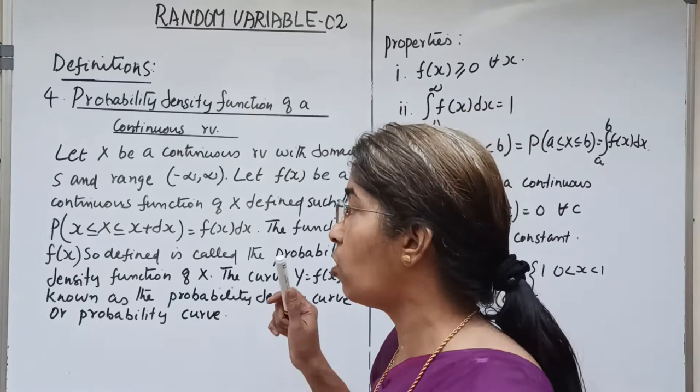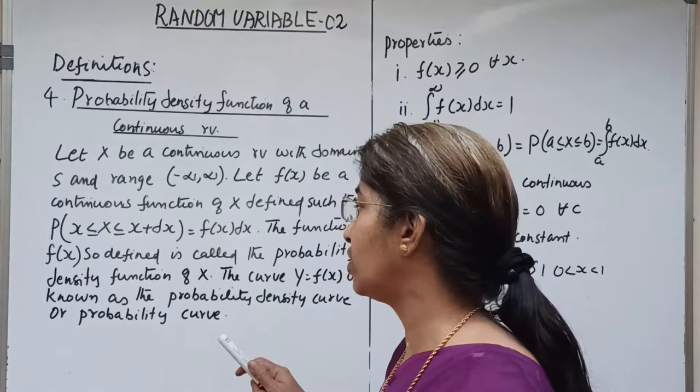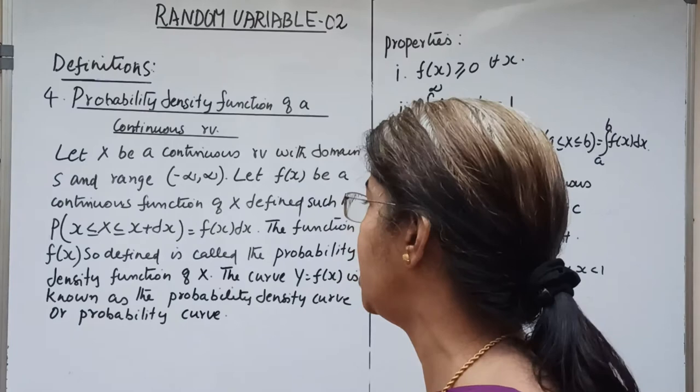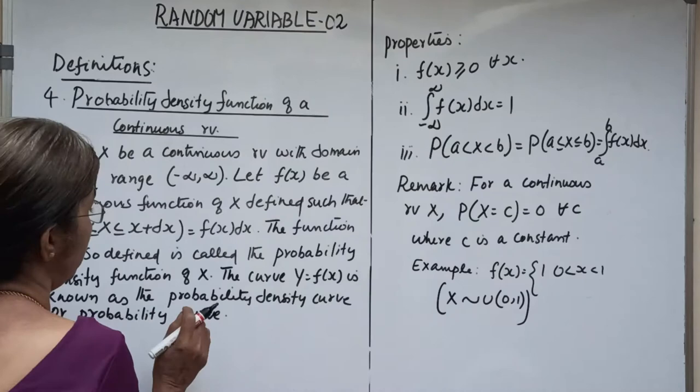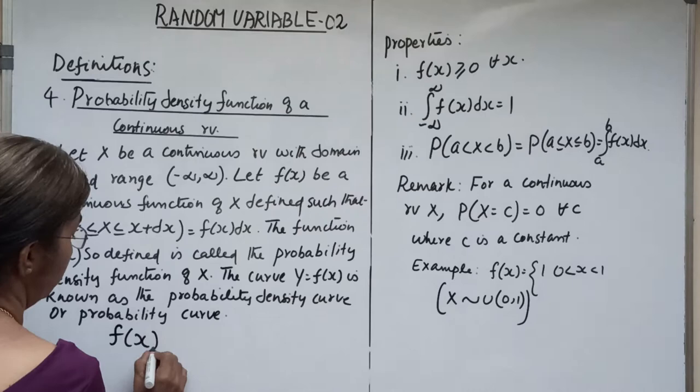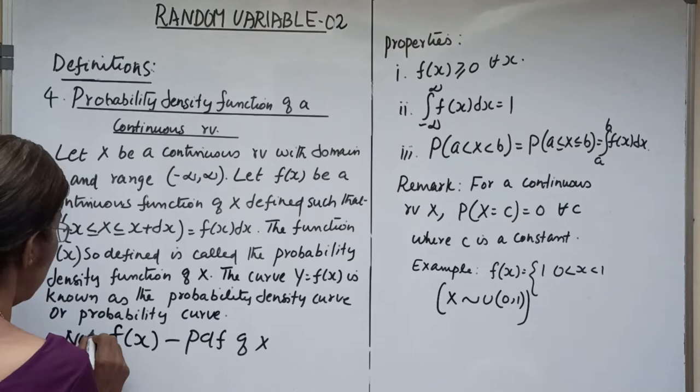In the case of a continuous random variable, the name is probability density function — the PDF of x. The function f(x) so defined is called the probability density function, which is the PDF of x.